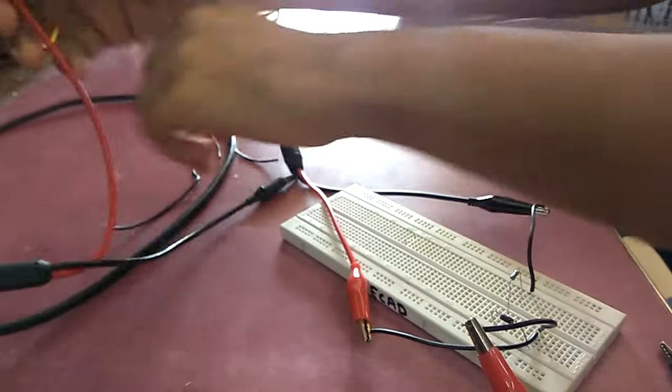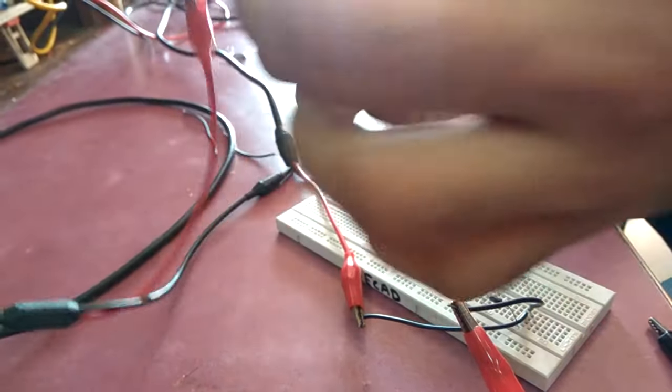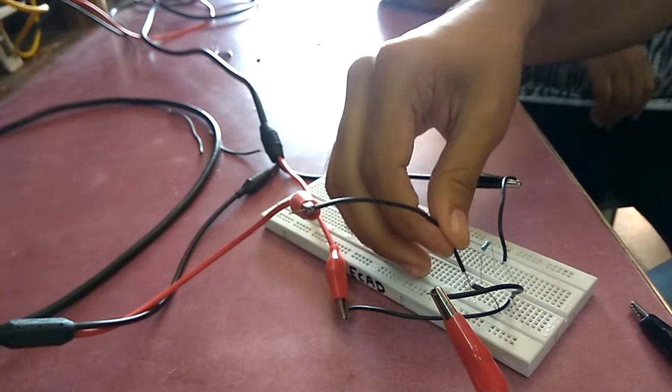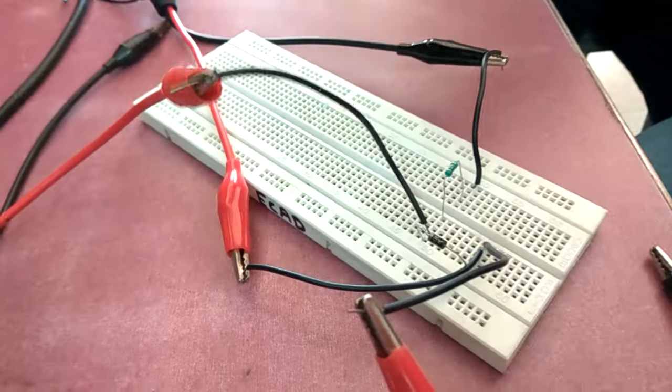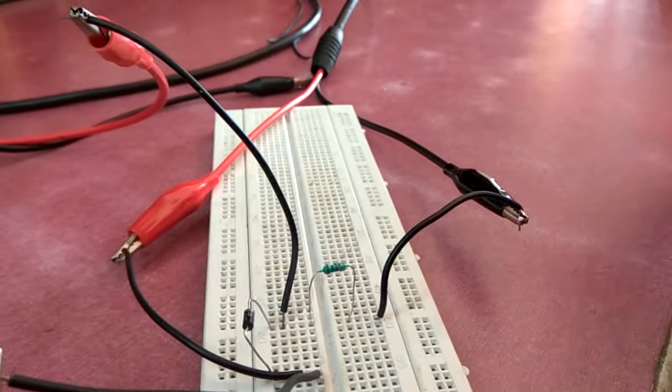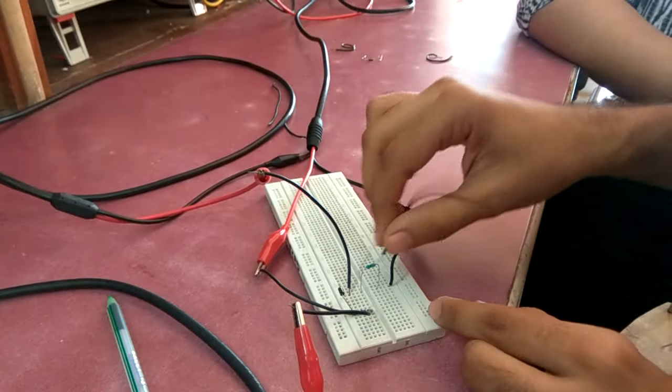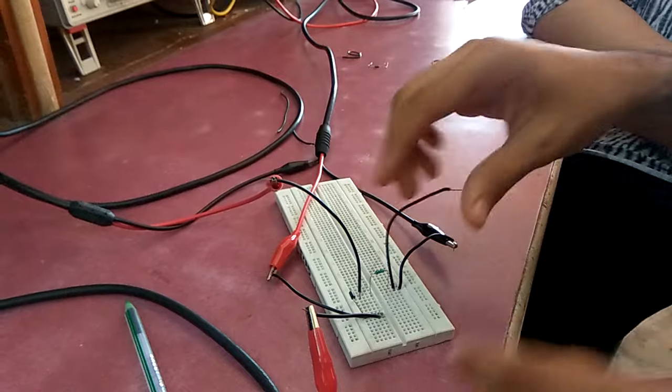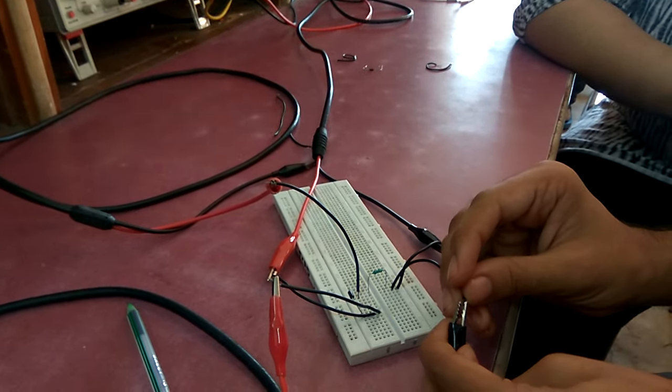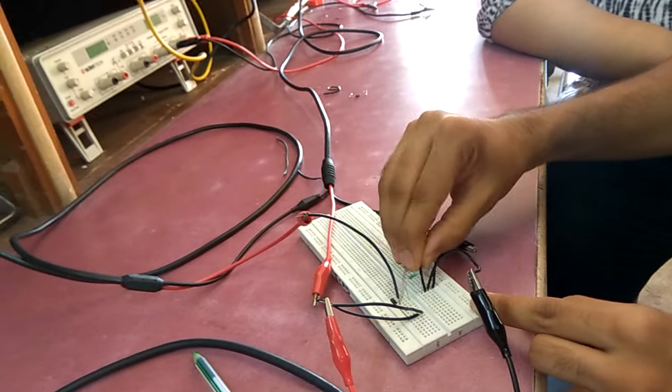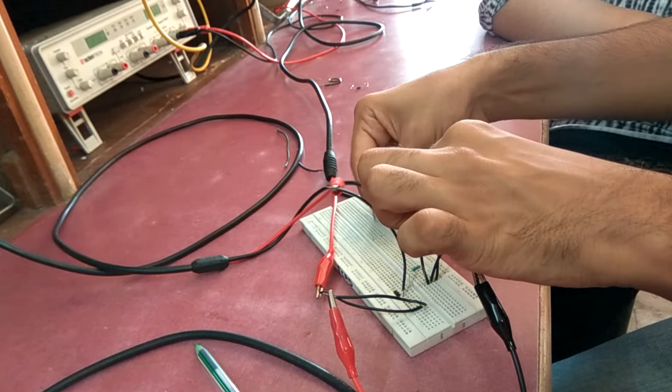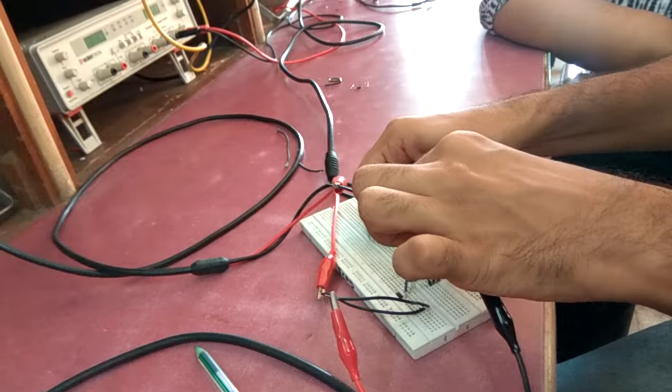And channel B probe I am connecting it to the point where I will get output, that is the negative end of the diode. Now the most important part is common grounding. And now we are using this wire to common ground the whole circuit with the CRO. Like the CRO terminals are internally short grounded but still we will connect both the grounds, the common ground we have in the circuit.